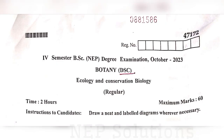Hello friends, welcome to NEP Solutions. In today's session we are going to discuss BSE 4th semester NEP Botany major question paper. The paper name is Ecology and Conservation Biology. Before starting the video, if you are visiting our channel for the first time please subscribe and press the bell icon for instant notifications. Let's start the video.